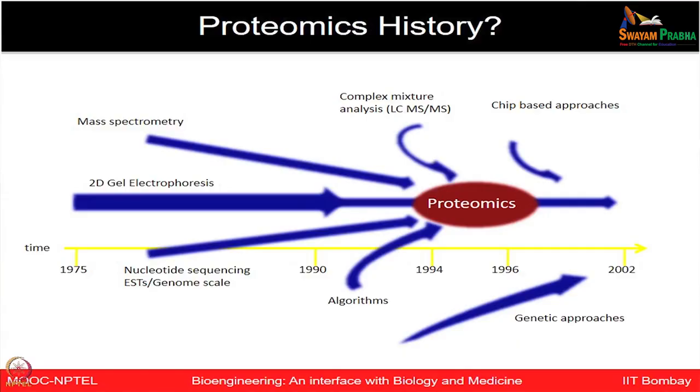Let us now talk about the history of proteomics. Is this field very new? As mentioned, maybe after genomics the new field of proteomics really got attention. However, the development of proteomics actually spans a very long time scale. Even from the 1970s, two-dimensional gel electrophoresis — how to separate proteins based on their different properties of molecular weight and isoelectric point — was used by Close and Farrell in 1975. Simultaneously, different advancements were happening in the field of mass spectrometry.